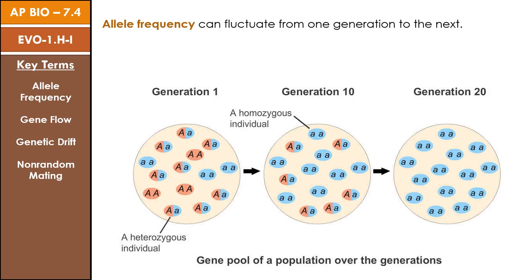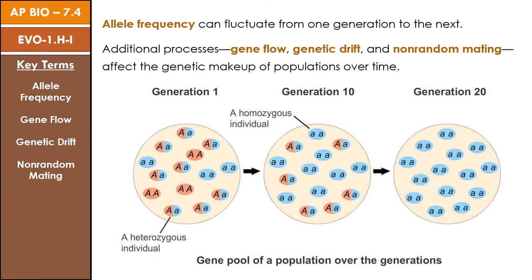We spent the last topic discussing natural selection as a major mechanism of evolution, which is the change in allele frequency in a population over time. But allele frequency can actually be affected by several other factors aside from natural selection. These can include additional processes like gene flow, genetic drift, and non-random mating, all of which can affect the genetic makeup and change the allele frequency of a population from one generation to the next.